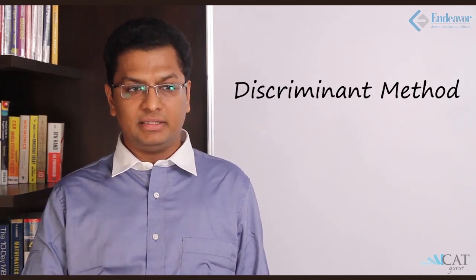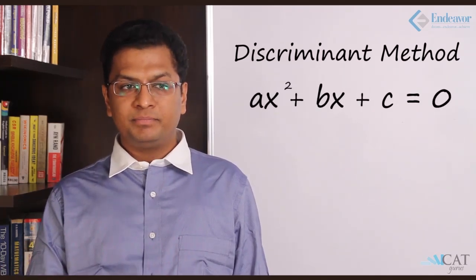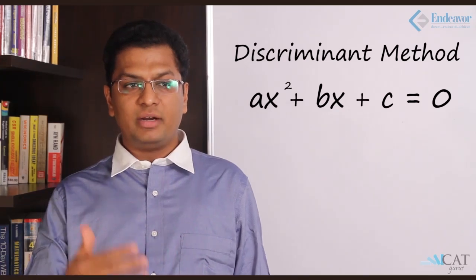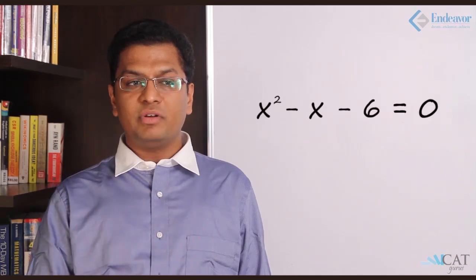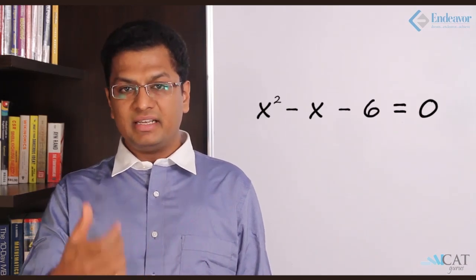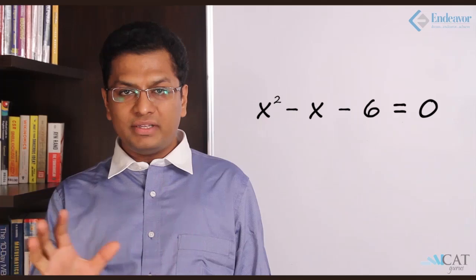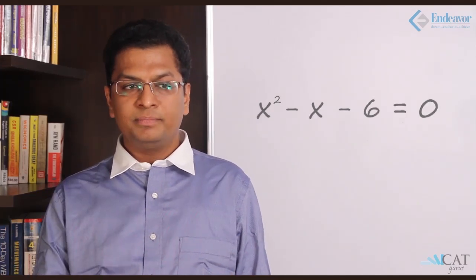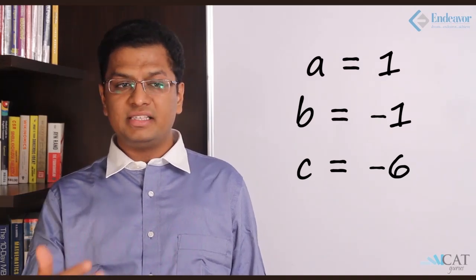There is another method of solving the same problem. This is called the discriminant method. All equations have to be brought down to the form ax² + bx + c. Let us write the same equation: x² - x = 6. This is not in the standard form, so we bring it to: x² - x - 6 = 0. In the standard form, all terms come on one side of equals and the other side is 0. So here a = 1, b = -1, and c = -6.